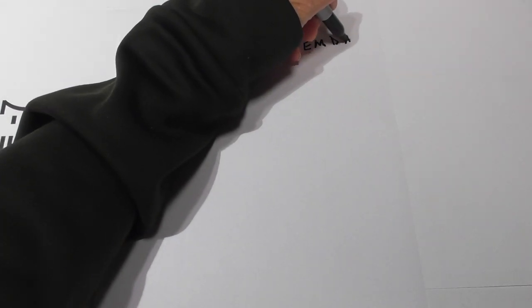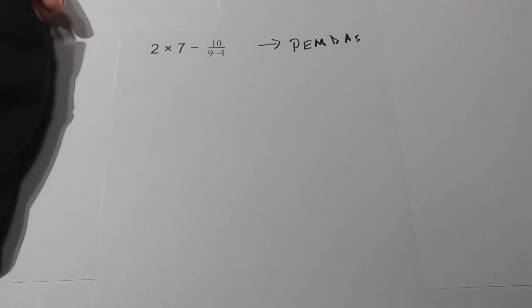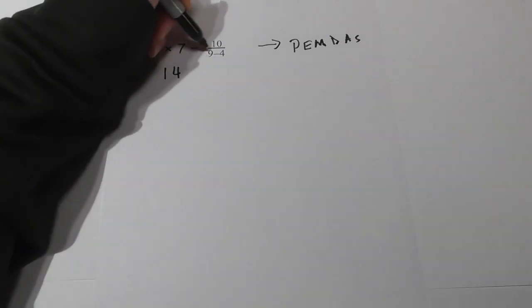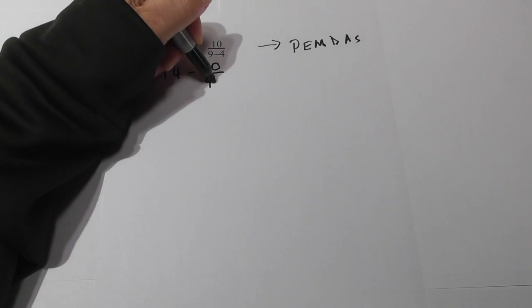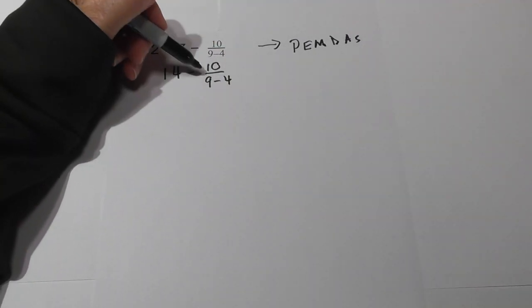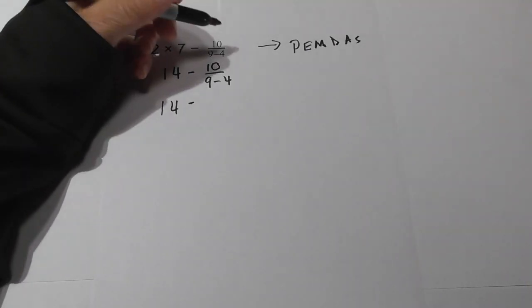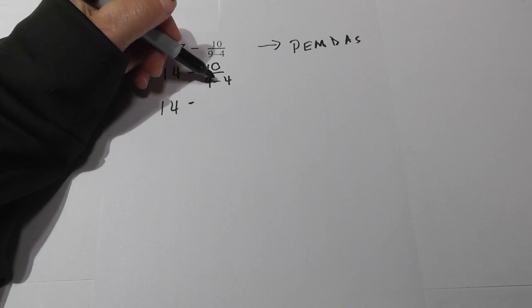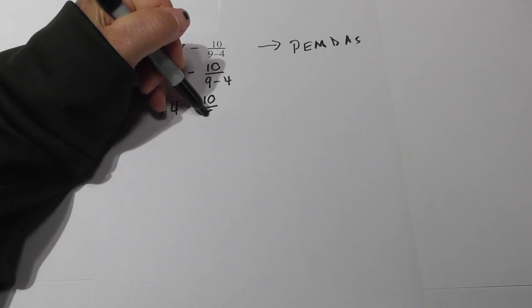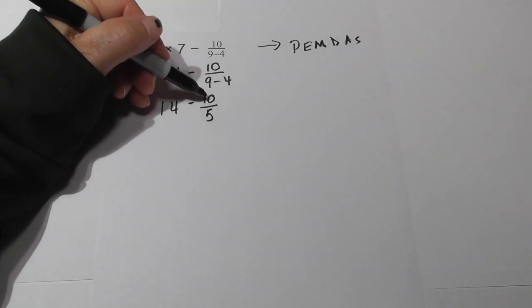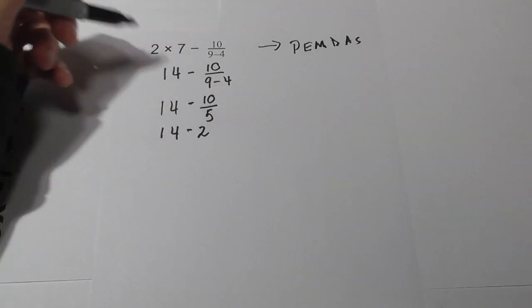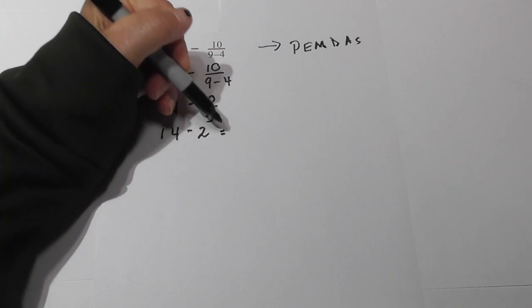Now our last problem. Left to right — no parenthesis, no exponents. We have multiplication: 2 times 7 is 14. Bring down minus 10 over 9 minus 4. Working left to right, do we have division? Yes — we have this fraction. Work on the denominator: 9 minus 4 is 5. So we have 10 over 5, which reduces to 2. Bring down the 14. 14 minus 2 is 12.